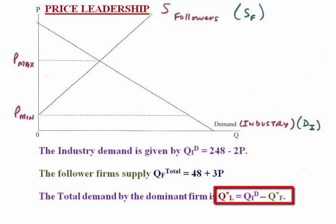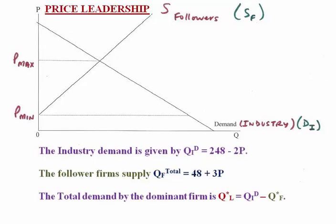The dominant firm will ask the question: how much can the followers supply relative to what is being demanded? At the price we call Pmax, the followers can supply everything that is being demanded, so the dominant firm or the leader will supply zero. At Pmin, the followers are just about to start supplying — it is not in their interest to supply at that price, but for any price higher than Pmin, the followers will start to supply.